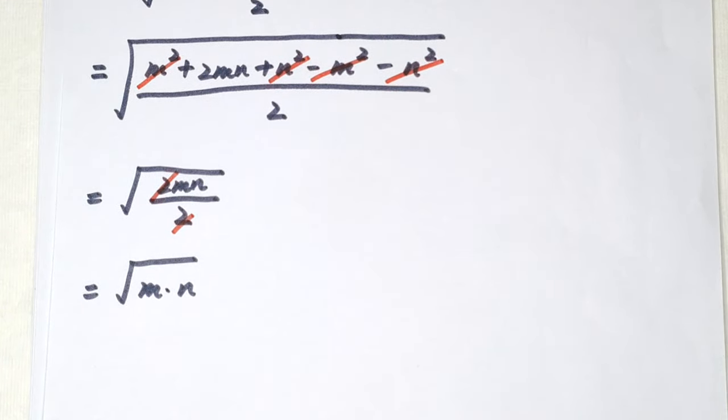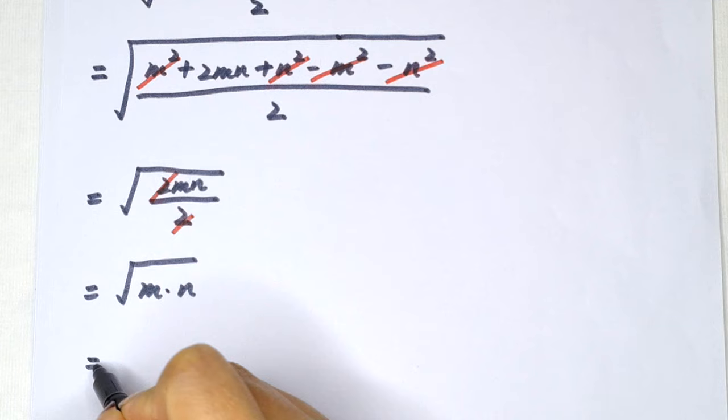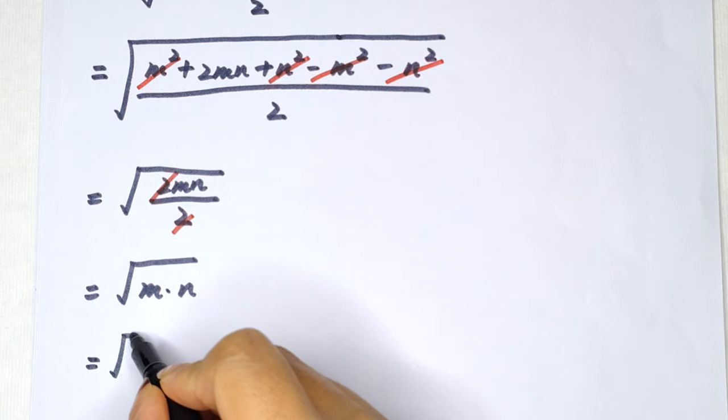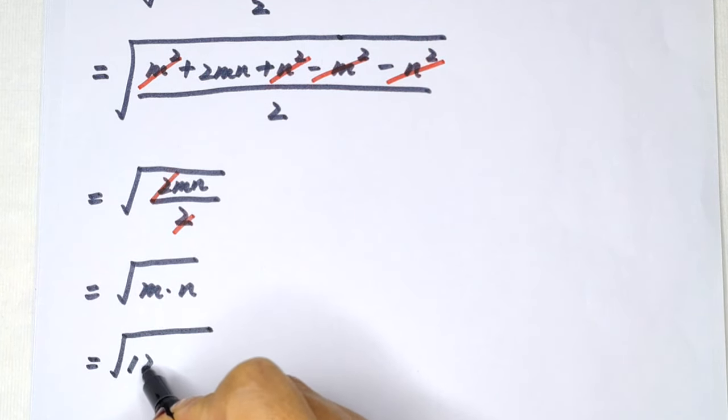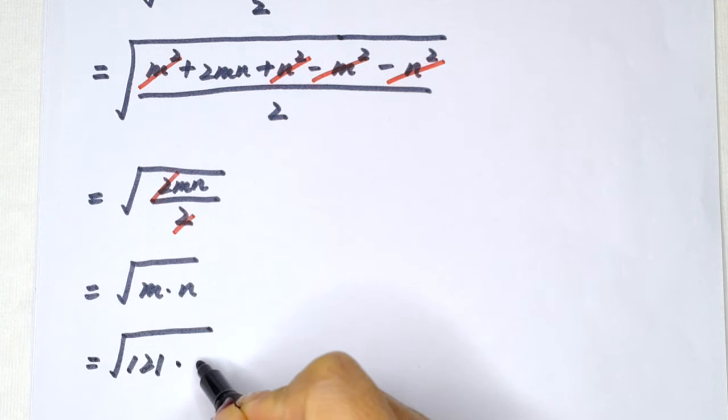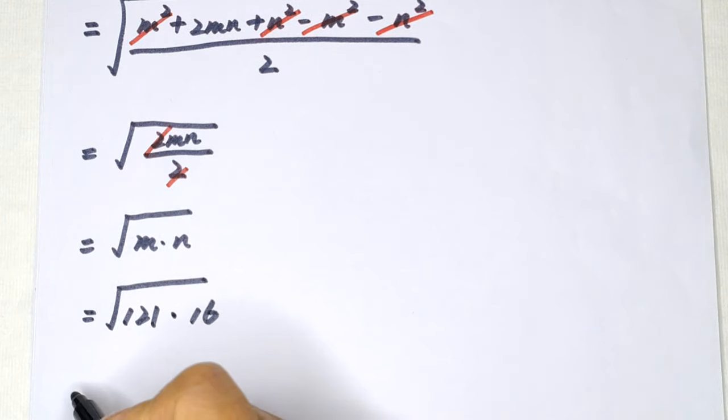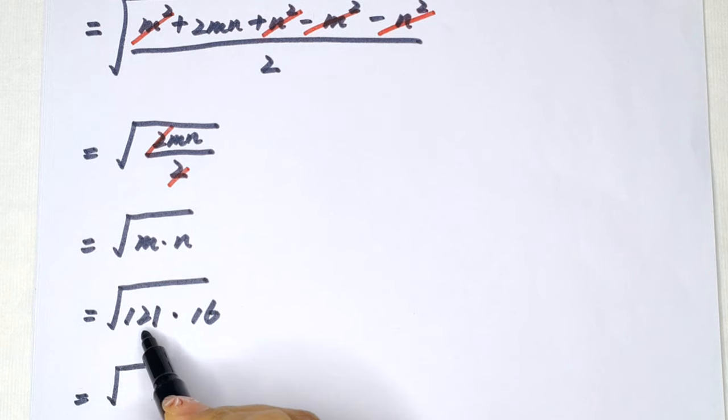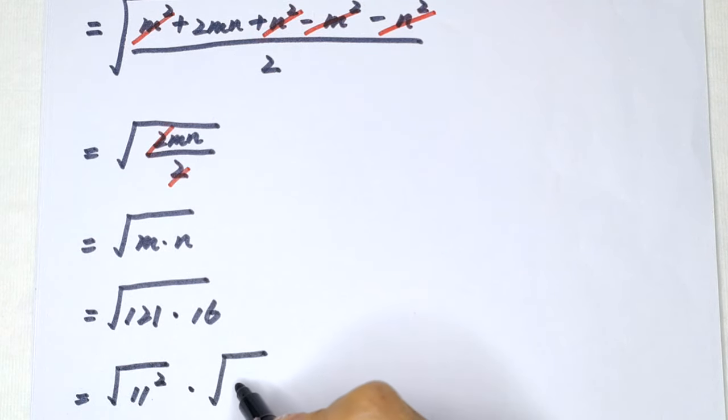So here is square root of 121 times 16. The square root of this is 11 squared, then times square root of 4 squared.